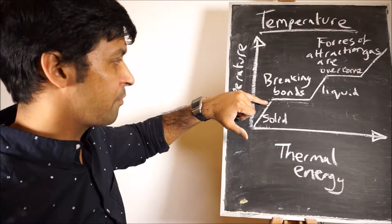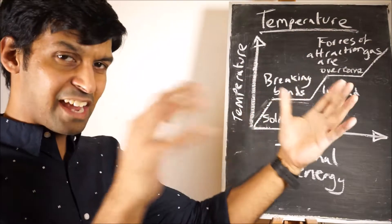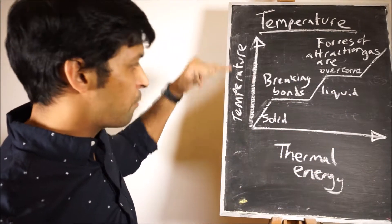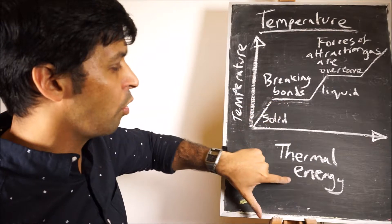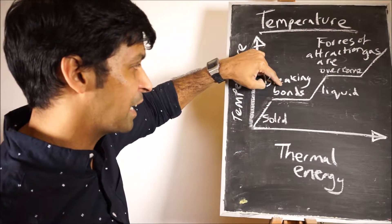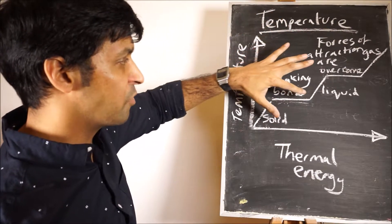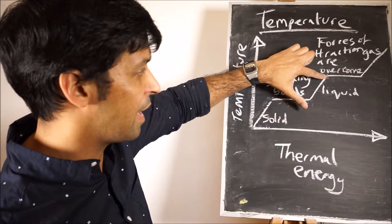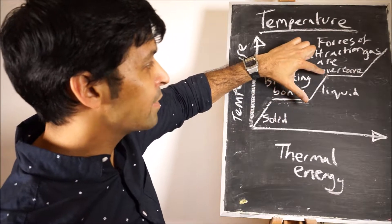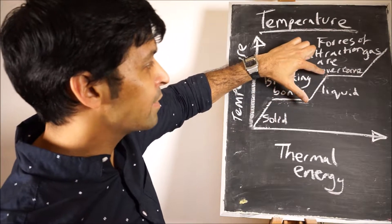So just to reiterate what's going on. Particles are moving faster and basically just taking up more space. Temperature is increasing. Temperature no longer increases because all of the energy is going towards breaking bonds. Once all of the bonds have broken, it's turned into a liquid, and the temperature once again increases up here.